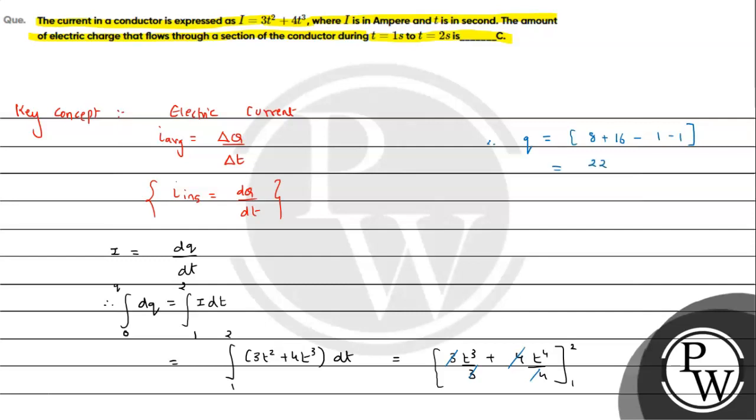24 minus 2 equals 22 coulombs. So this is the answer for the question. I hope you understood the solution. All the best.